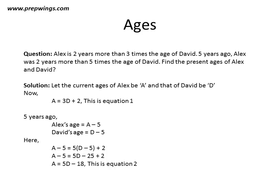Thus, our second equation becomes A minus 5 equal to 5 times D minus 5 plus 2. So our equation ultimately boils down to A is equal to 5D minus 18. We have two equations.